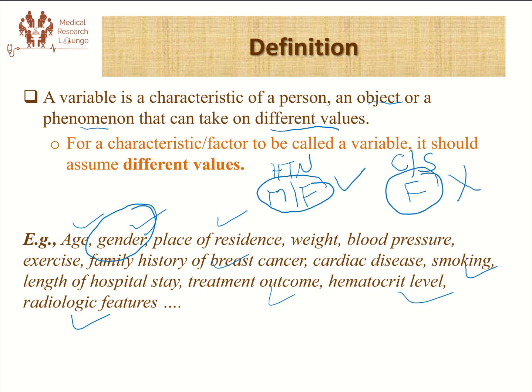It can't assume different values. Since the whole purpose of measuring a variable is to use it in our analysis so that we can understand the within-variable characteristic difference or its influence on our outcome — for example, by having male and female categories in our hypertension study, we can later analyze whether females or males are more at risk of being hypertensive. So unless a characteristic can assume different values, we can't call it a variable, and we shouldn't collect data on it because it's known to be homogeneous for every study participant.